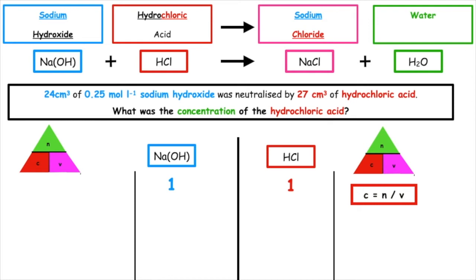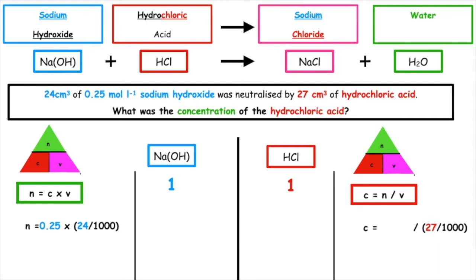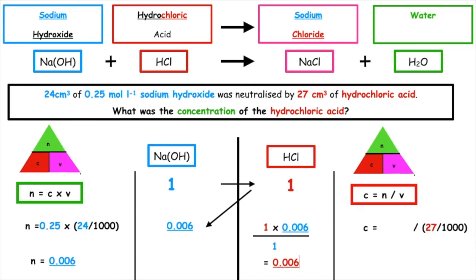On the side to do with hydrochloric acid, we write C = N/V. The volume we've been given is 27 cm³ divided by 1000 to put it into litres. To complete that, we calculate the number of moles of sodium hydroxide: N = C × V. The concentration is 0.25, times 24 divided by 1000, giving us 0.006 moles. We scale: 1 × 0.006 ÷ 1 gives 0.006 moles. We insert that into our final equation: 0.006 ÷ (27/1000), giving a concentration of 0.22 mol/L.